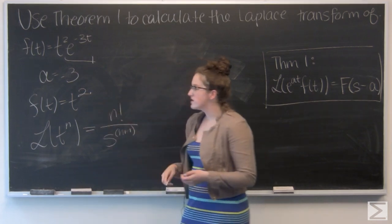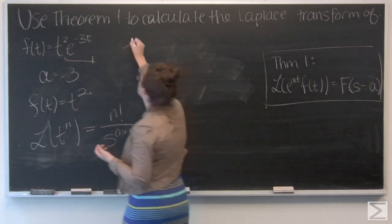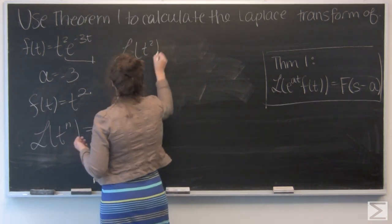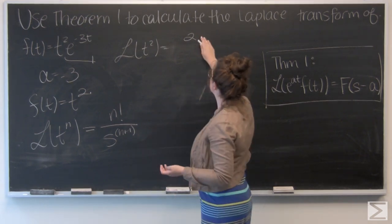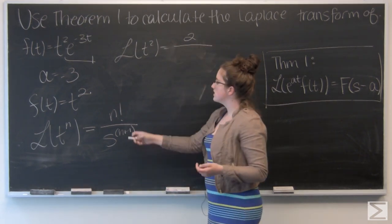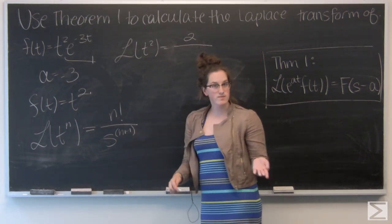So for t squared, I'm going to get 2 factorial, which is just 2, over s to the 2 plus 1, s cubed.